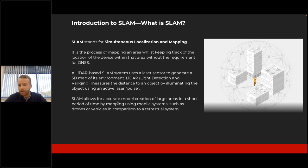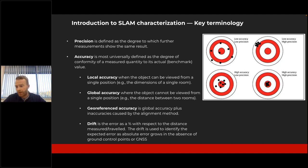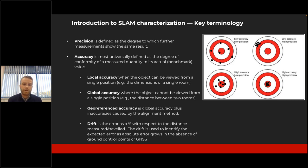This means we can move around the environment whilst capturing data — a massive benefit over terrestrial systems where you have to be stationary to capture data — so we can capture a vast amount of data in a significantly shorter period of time compared to a terrestrial laser scanning system. We'll be talking a lot about the Elios 3 with GeoSlam Connect accuracy and precision today, so I wanted to cover some key terms to make clear what the accuracy results actually mean.